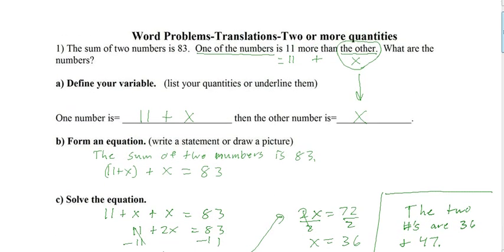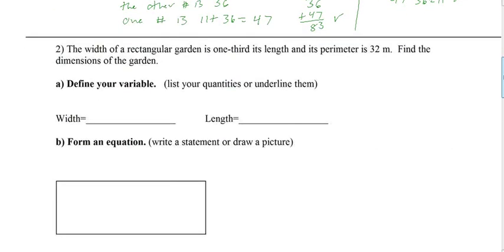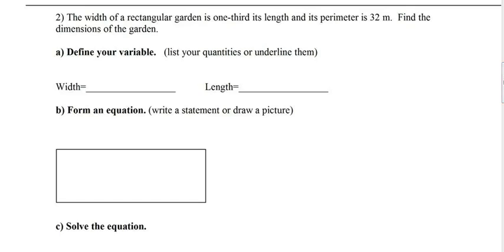So in each one, there's going to be some little thing that you can translate to write one of the quantities in terms of the other, and then allow you to find some relationship between the quantities. Okay? So let's try another one. The width of a rectangular garden is one-third its length. There's our translation. So it's saying the width of the rectangular garden. That's one quantity. And then the length. We also have the perimeter. So we'll be using that later.